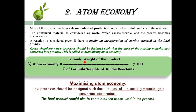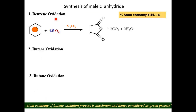The formula for atom economy is: formula weight of the product divided by the sum of formula weights of all reactants, multiplied by 100. Atom economy = (formula weight of product / sum of formula weights of reactants) × 100. This is the formula you have to learn.